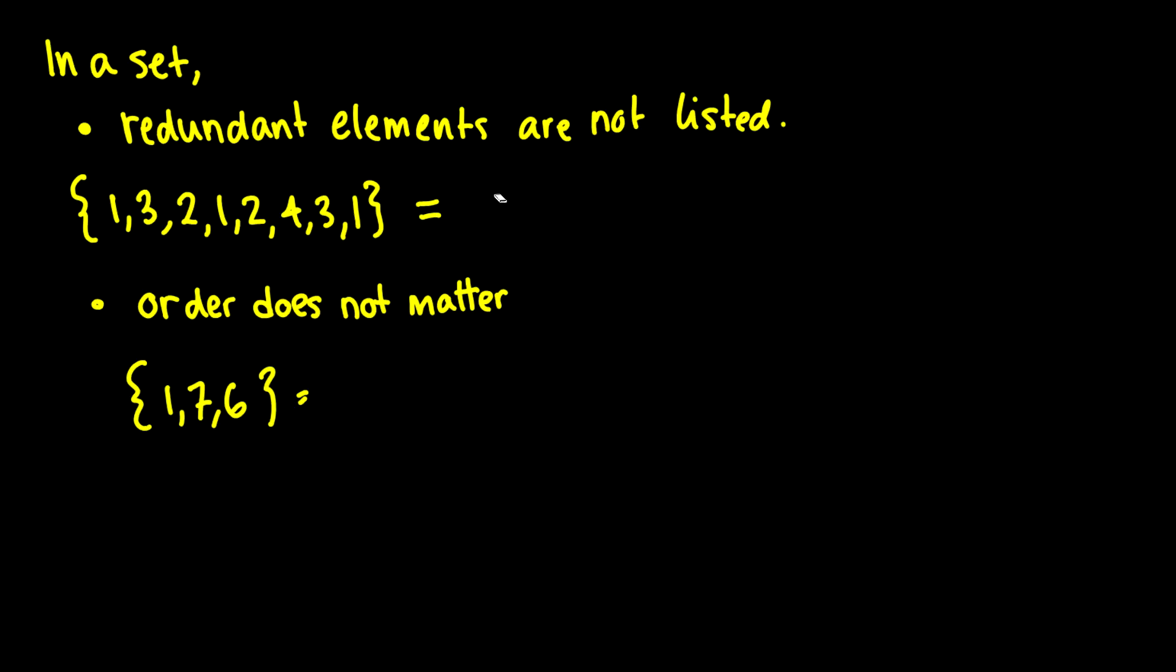So this set right here, if we were to draw an equivalent set, well we have 1, okay, so that's good. So we check this 1, but we also have these redundant ones, so we're not going to include it.